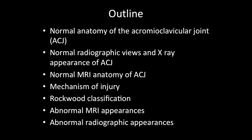In today's session we'll discuss the normal anatomy of the AC joint, normal radiographic views and X-ray appearances, normal MRI anatomy of the joint, mechanism of injury, Rockwood classification, and abnormal MRI and radiographic appearances.